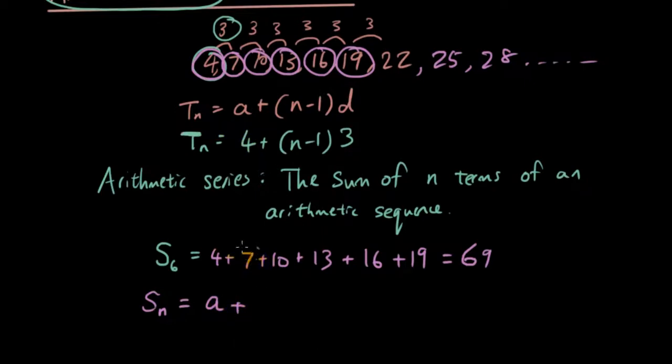Now what is 7? 7 is a plus d, because d is 3 and 7 comes from 4 plus 3. And then I have 10 which is, let me use a different color, 10 is basically a plus 2d.